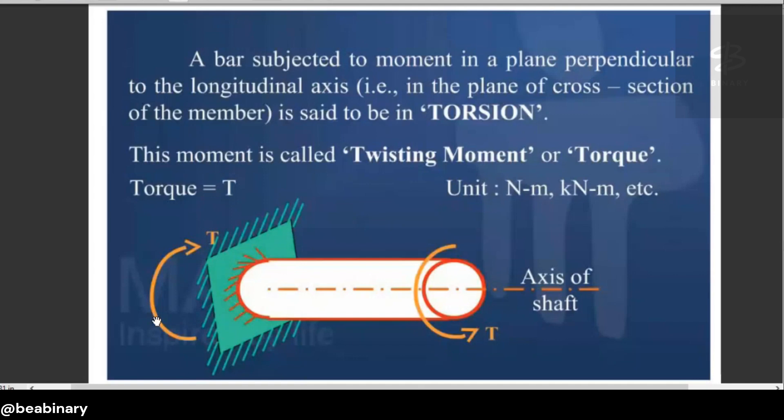And because of this, the equal and opposite amount of torque is generated at the fixed end.